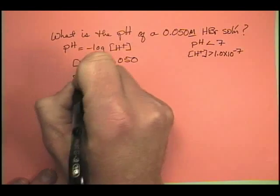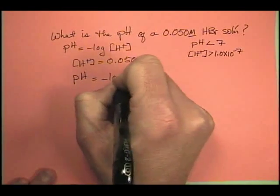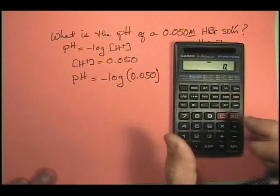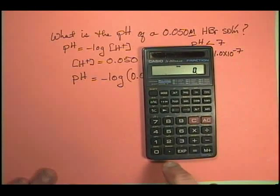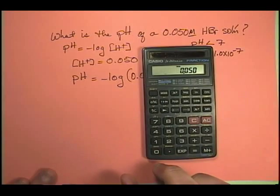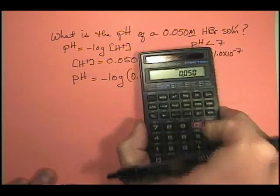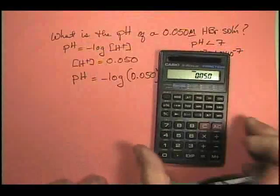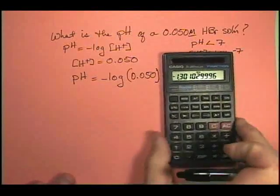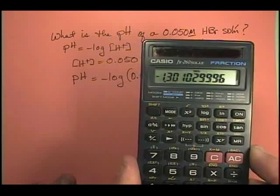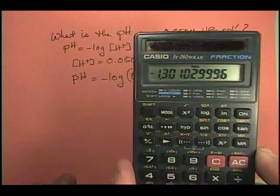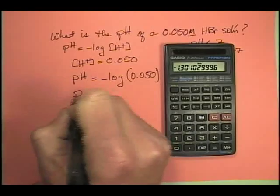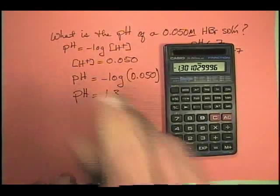So, now we just plug and chuck. So, the pH is equal to the negative log of 0.050. What do we get? Well, I go ahead and put this in. 0.050. Now, I'm going to hit the log key. There it is. Right there. Go ahead and hit log. And I get negative 1.301. Well, remember, it's the negative of the log. So, a negative times a negative is positive. So, the pH is equal to 1.301.